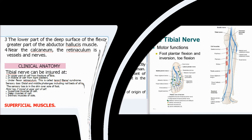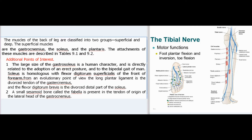Superficial muscles. The muscles of the back of the leg are classified into two groups: superficial and deep. The superficial muscles are the gastrocnemius, the soleus, and the plantaris. The large size of the gastrosoleus complex is a human character, directly related to the adoption of an erect posture and bipedal gait. Soleus is homologous with flexor digitorum superficialis of the front of the forearm. From an evolutionary point of view, the long plantar ligament is the divorced tendon of the gastrocnemius, and the flexor digitorum brevis is the divorced distal part of the soleus.